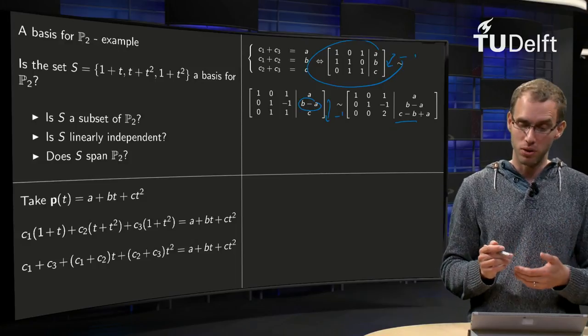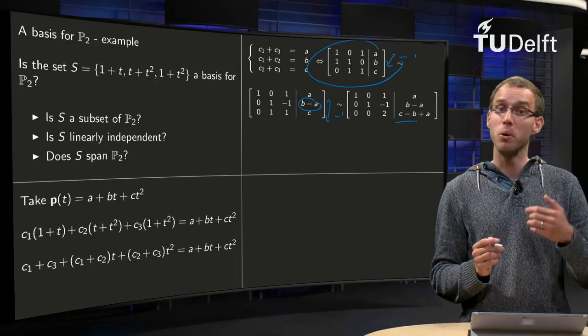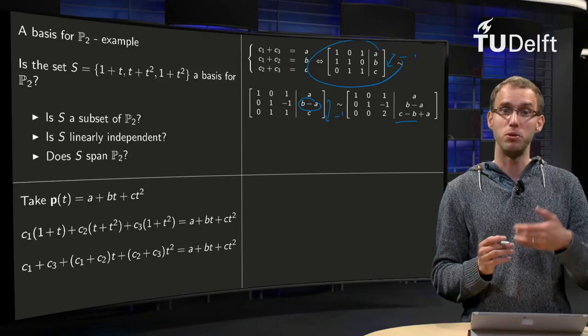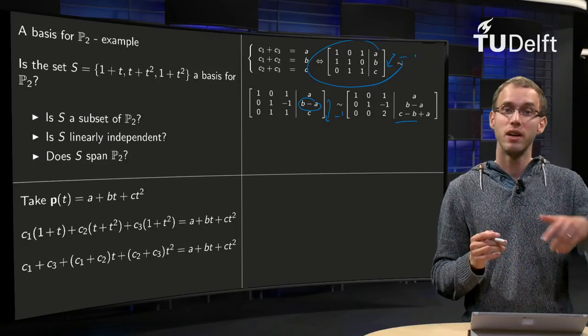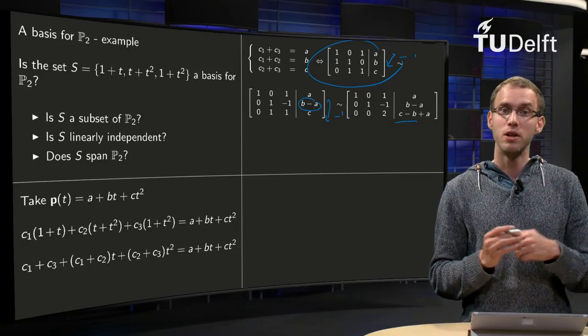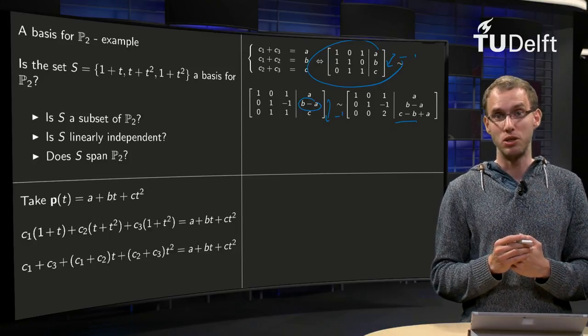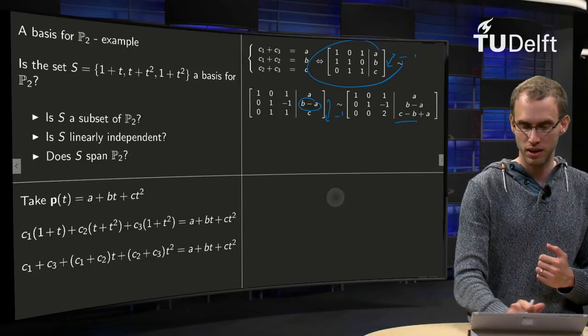In fact, you have on the last row 0 times c₁ plus 0 times c₂ plus 2 times c₃ equals something, so you can find c₃ and so on and so on, so you can continue. So you know the system has a solution, a unique solution in fact.